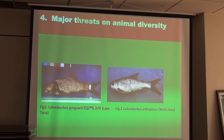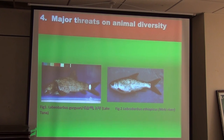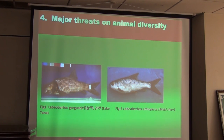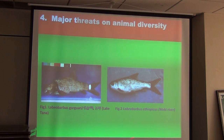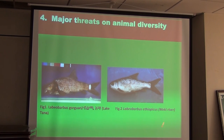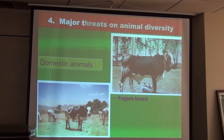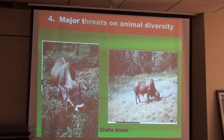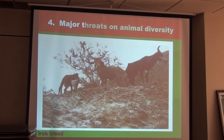In aquatic genetic resources, species such as Labeobarbus gorgorensis are locally threatened in Lake Anna, and Labeobarbus tropicus is locally threatened in the Meki River. Among threatened domestic animals, the most commonly mentioned are Fogera breed, Sheko breed, and Arado cattle breed — whose numbers are decreasing.